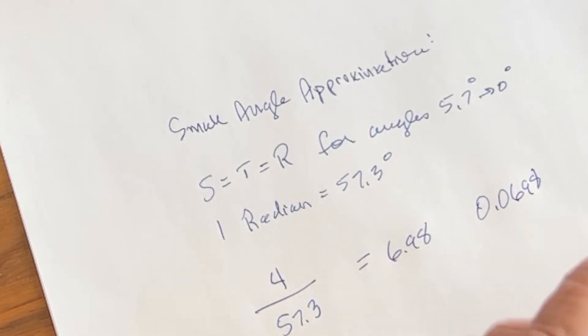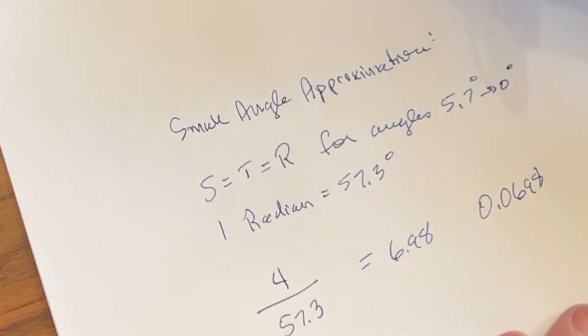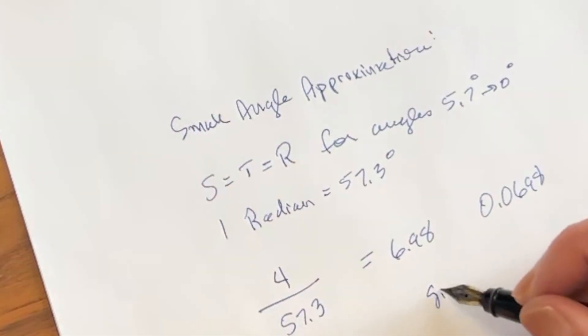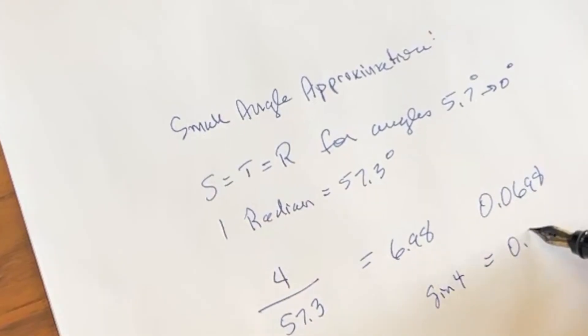Now let's go see what the actual sine of that is going to be. Now according to the newfangled electronic calculator, the sine of 4 degrees equals 0.069756. Now there is a slight difference in precision there, but again, give me an example where that's going to make a difference in a calculation in real life.